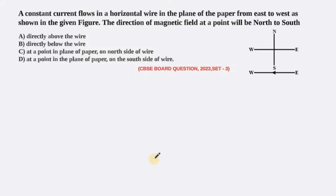Hello students, welcome back to Sigma Physics Online. Let's have a look at the next question from magnetic effect of current. This is a question asked by my students many times — they are not able to figure out how to find the direction of the magnetic field when a current is flowing in a particular direction. I thought I'd resolve their doubts using this question, and I'll be showing it to you in the form of a video.